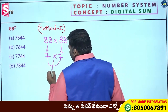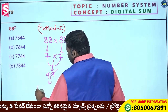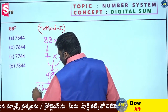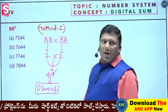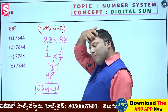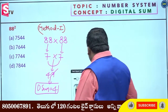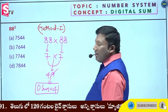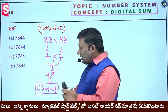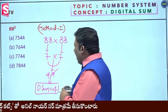7 sevens are 49. 4 plus 9 is 13. The question's digital sum comes to 4. So the question digital sum is 4.